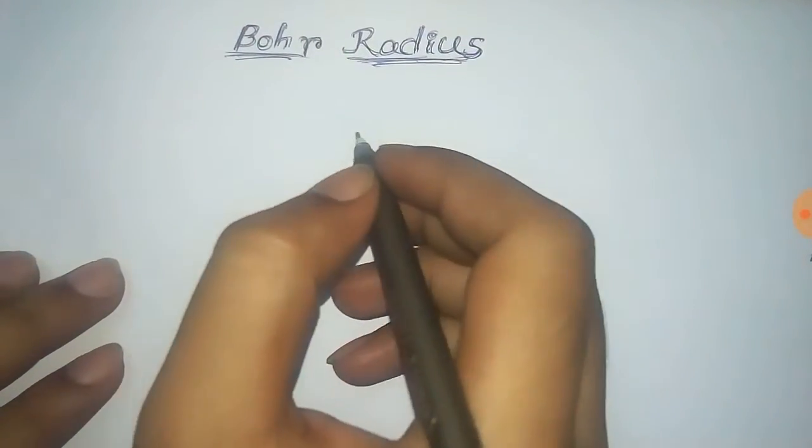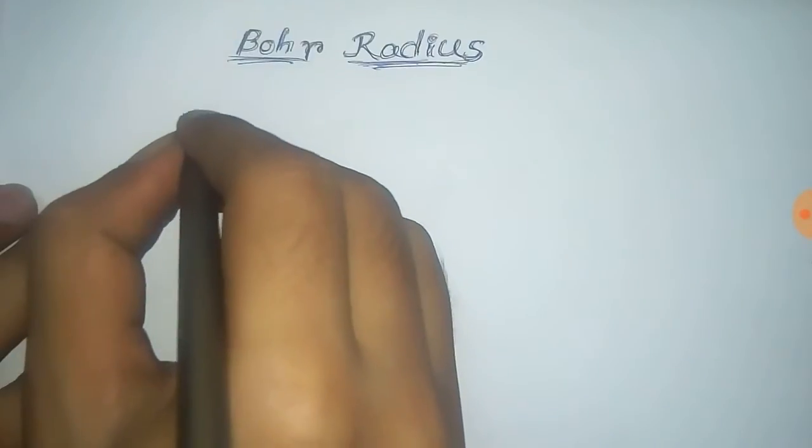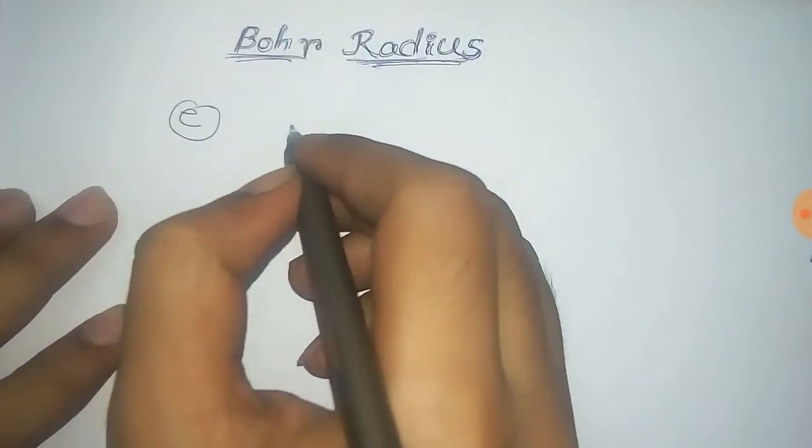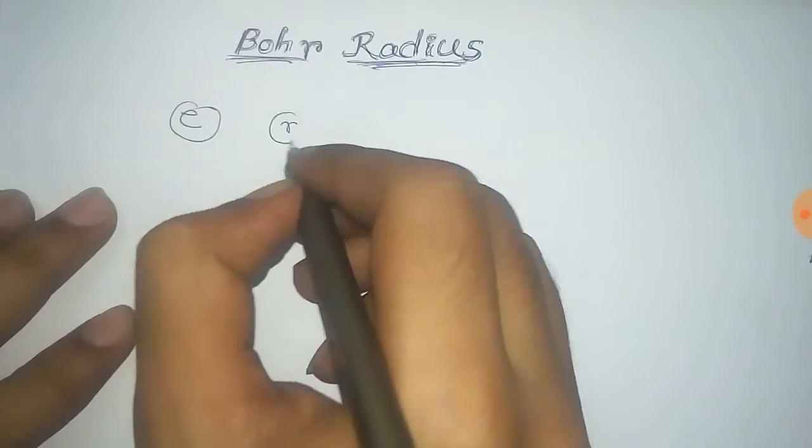We have to find the expression of Bohr radius for hydrogen-like atoms. So let us consider an electron of charge E revolving around a nucleus in an orbit of radius R with a velocity V.